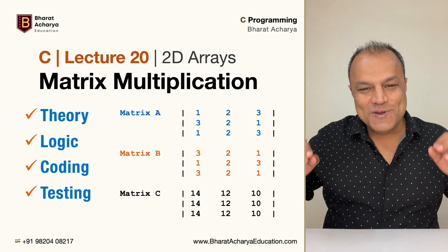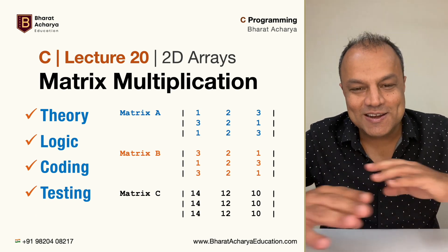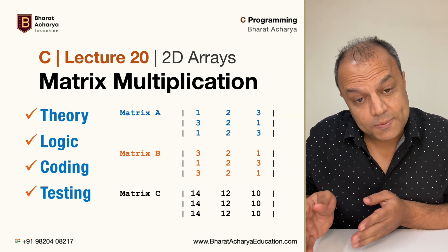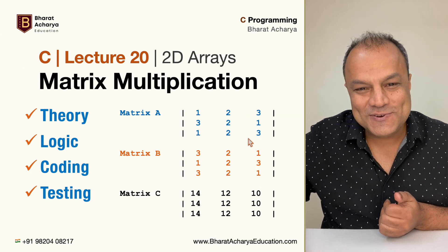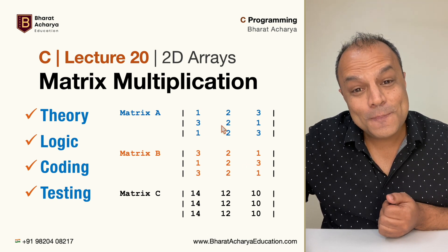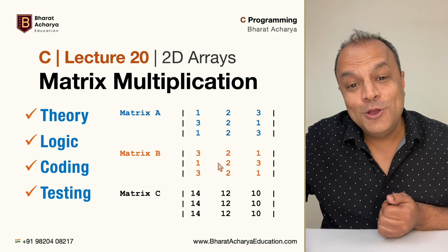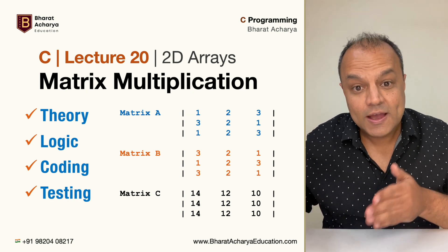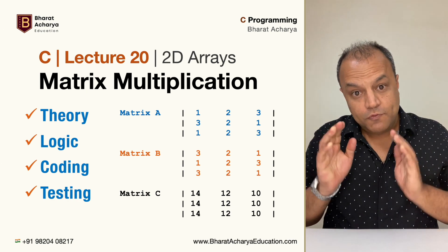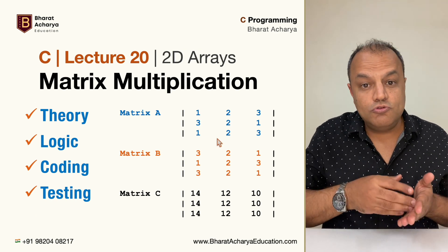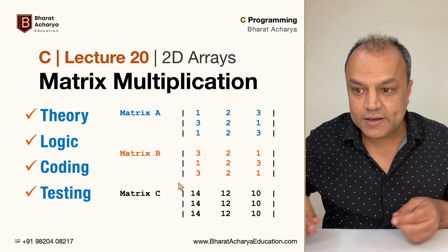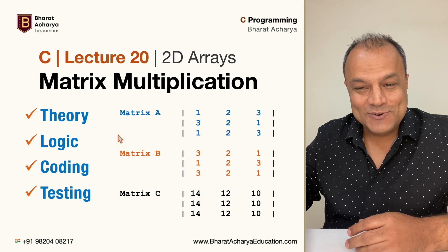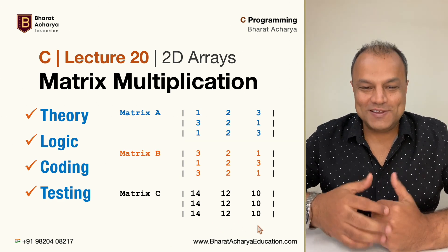The program I'm going to give you will be a flexible program — it can be scaled to any level and multiply any size matrix with any size matrix, following the rules of multiplication. The rule is: matrix A has rows and columns, matrix B has rows and columns, and the number of columns in matrix A should be the same as the number of rows of matrix B. For example, a 2x4 matrix A multiplied by a 4x7 matrix B should produce a 2x7 result matrix, taking rows from the first matrix and columns from the second.